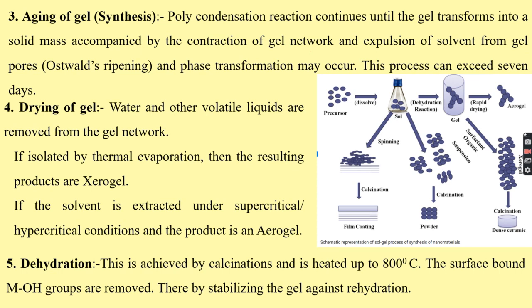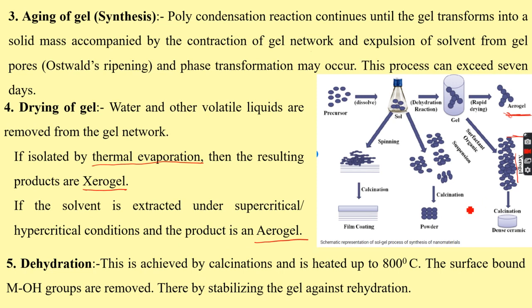During the drying process, water and other volatile liquids are removed from the gel network, resulting in either aerogel or xerogel. If isolated by thermal evaporation, the resulting product is xerogel. If the solvent is extracted under supercritical or hypercritical conditions, the resulting product is aerogel.